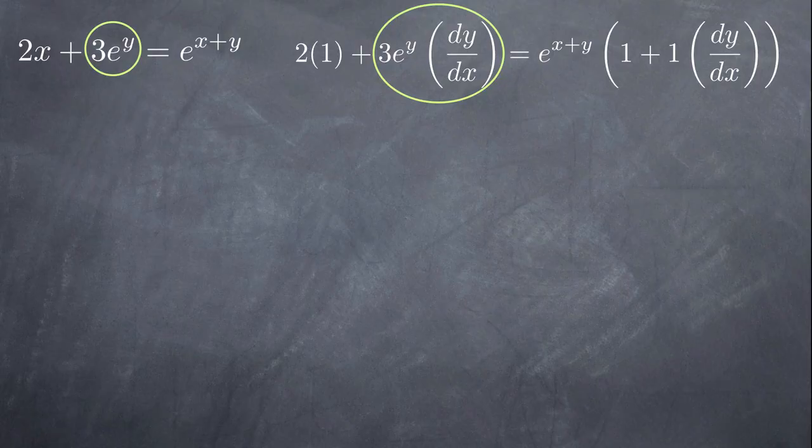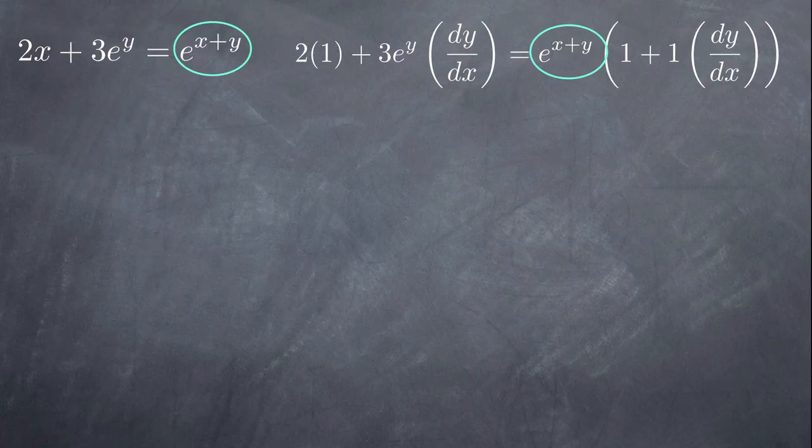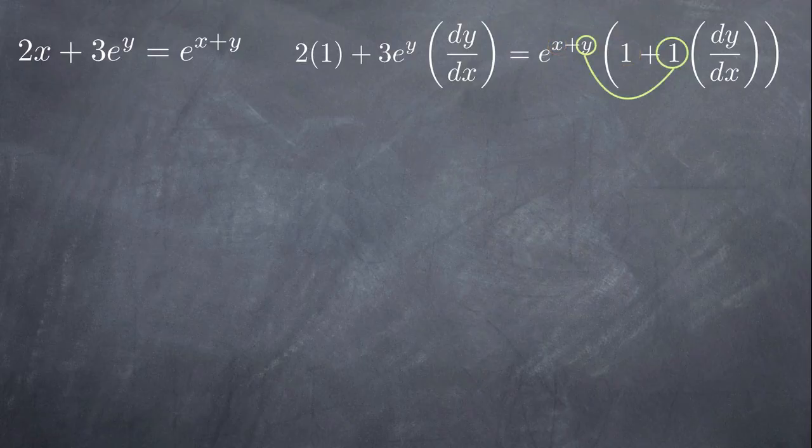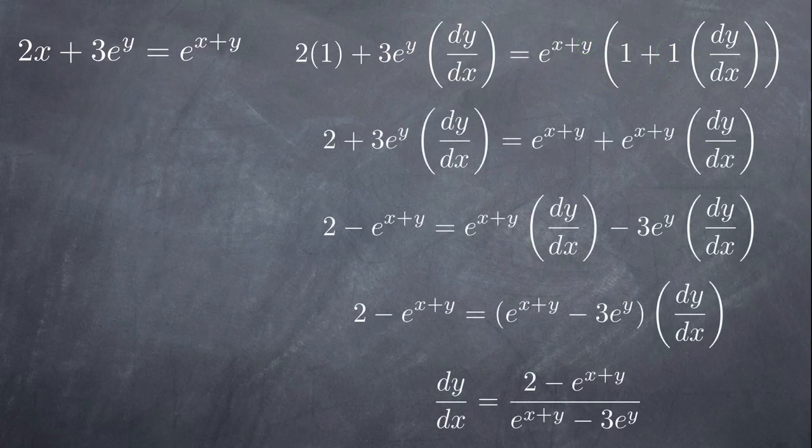Following the same pattern on the right-hand side, we come to e to the x plus y. Remember that the derivative of e to the x is e to the x. So the derivative of e to the x plus y is e to the x plus y. However, we need to use chain rule and multiply by the derivative of x plus y. We know the derivative of x is 1. The derivative of y is also 1, but when we take its derivative, we have to multiply by dy over dx. Now that the hard part is done, all that's left to do is simplify and solve for dy over dx.